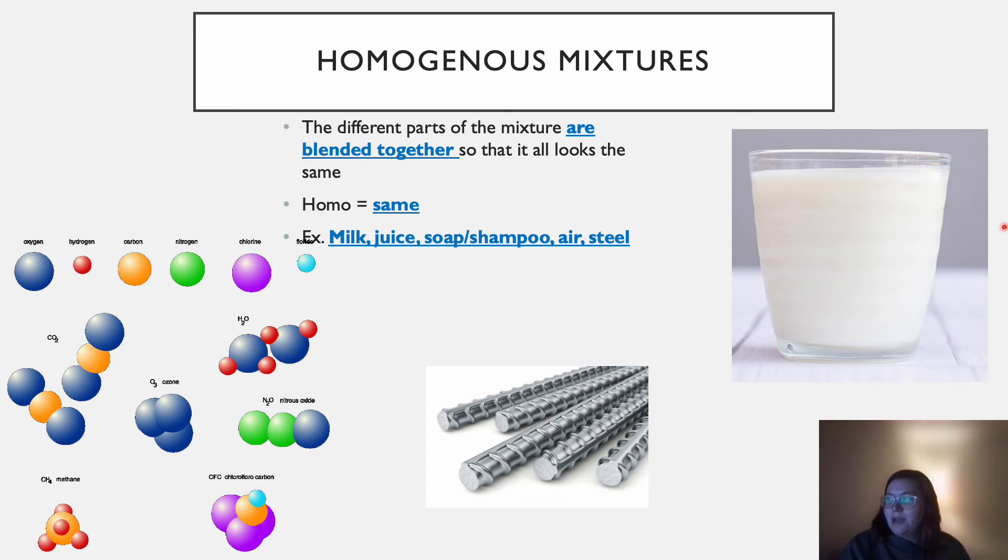Milk or juice are liquids that look the same all the way through. So you can't see any differences in the milk, but milk is made of things like sugars and fats and proteins. There might be calcium and vitamin D in there. And it's a lot of water as well, but you can't see those.